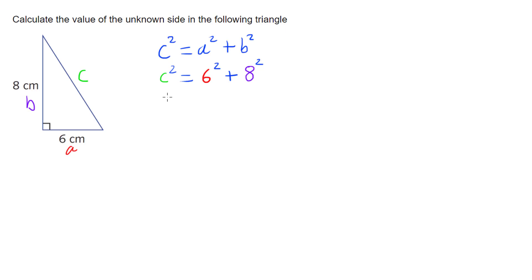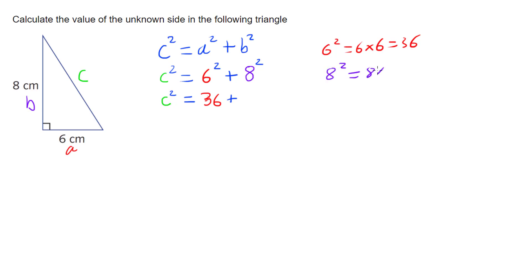Working this out, I still have c² on the left. Now I can do 6 squared — 6 squared is 6 times 6, which is 36. Then I add on 8 squared — 8 squared is 8 times 8, which equals 64. So now that I've done my squares, I can do the addition: 36 plus 64 gives me c² = 100.